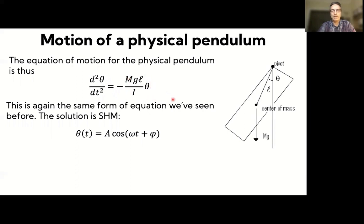Because the equation of motion has that mathematical form, we know the solution is simple harmonic motion. Our variable is theta, so we can describe it as: θ(t) = A·cos(ωt + φ), which is simple harmonic motion.